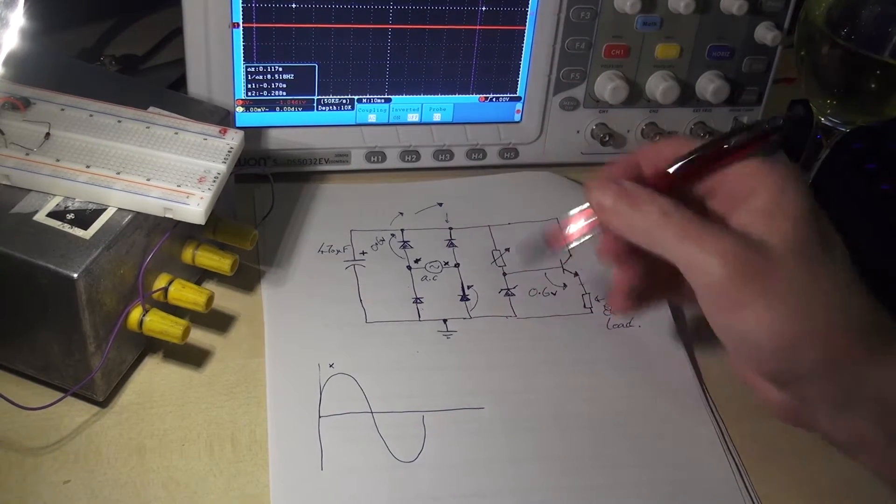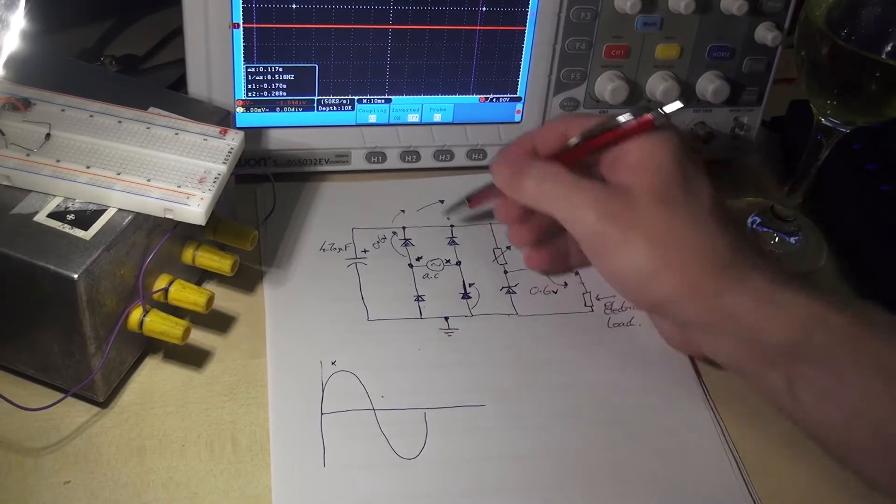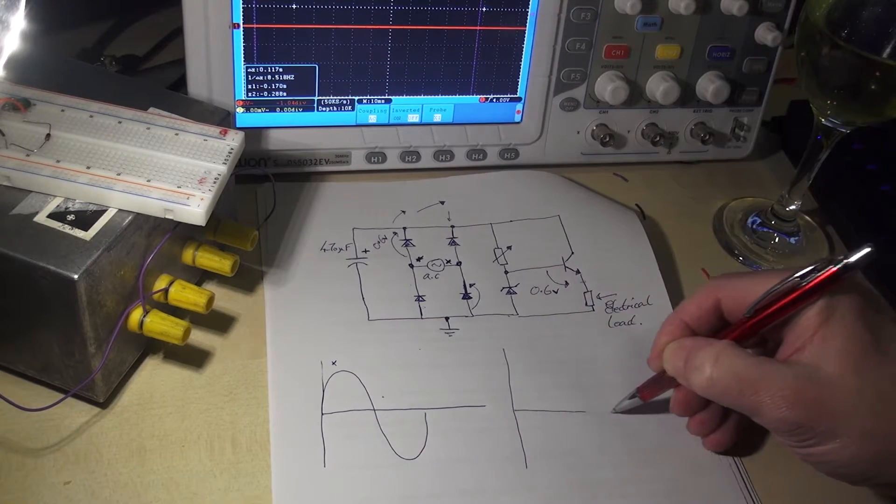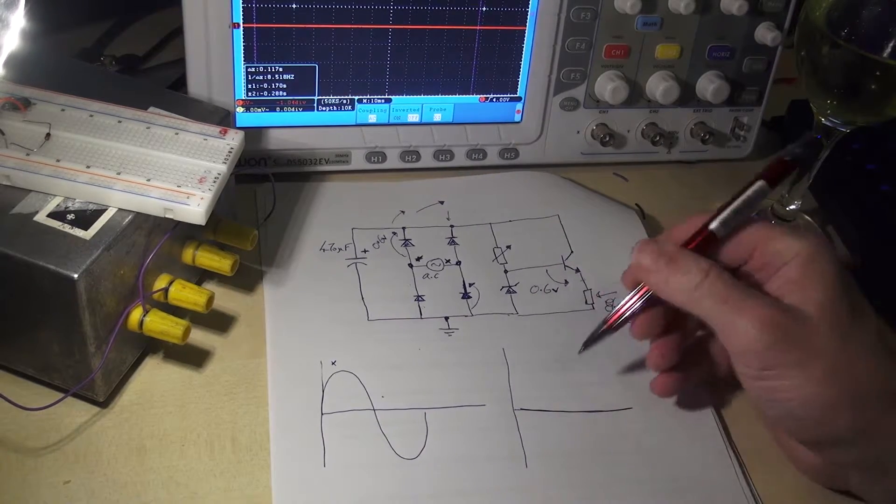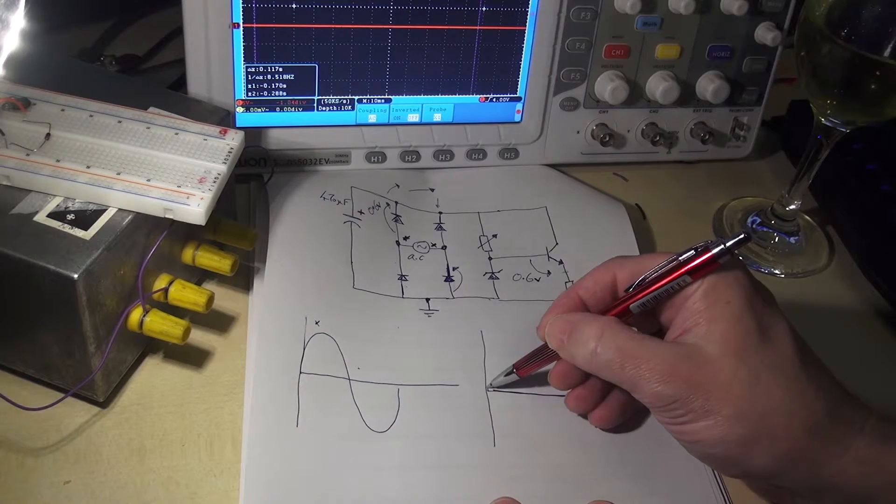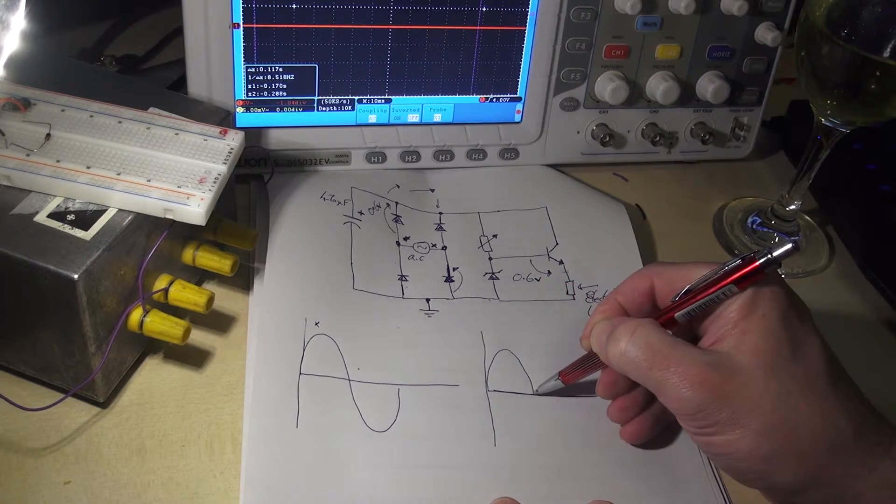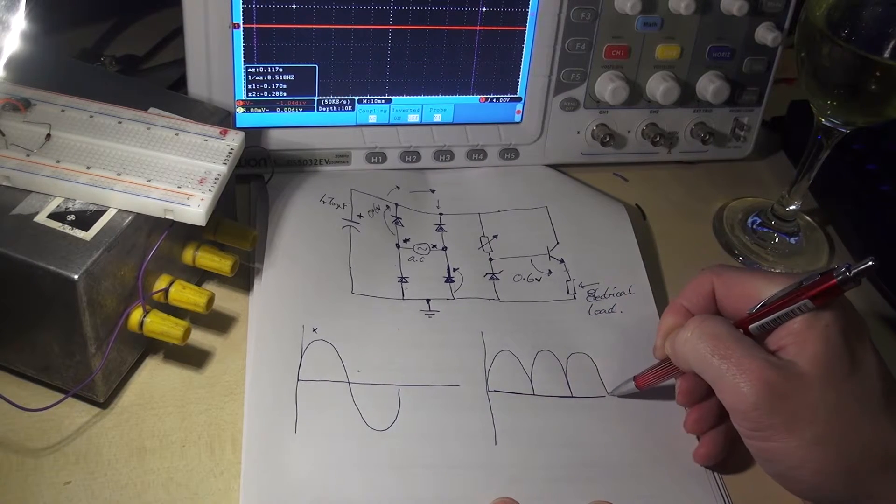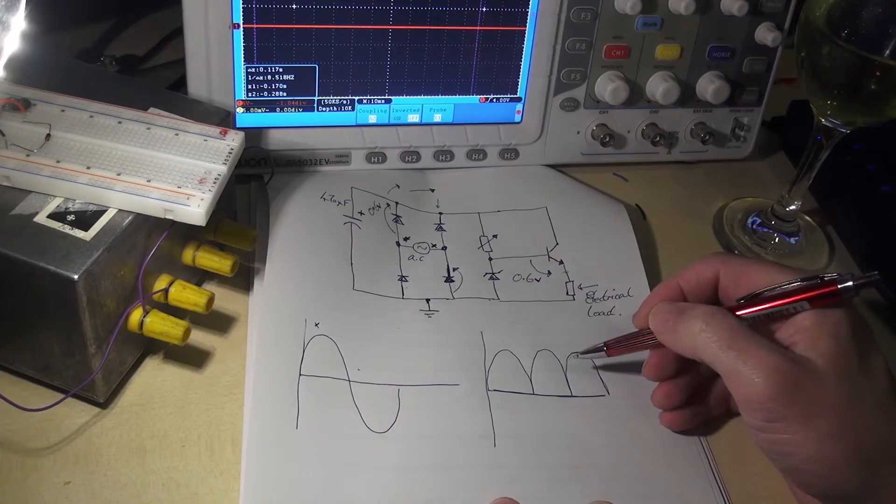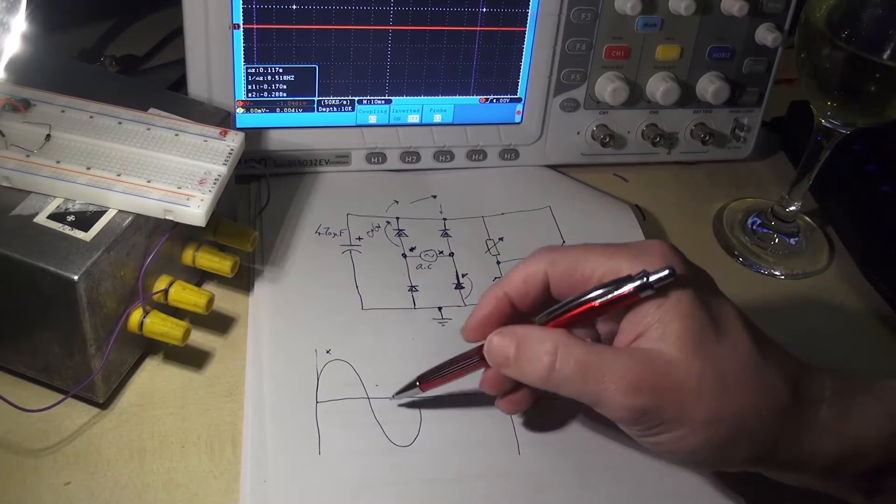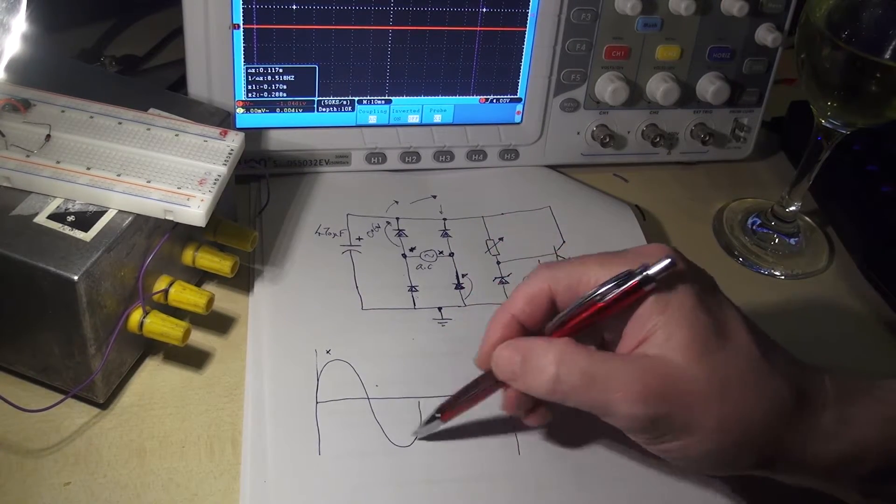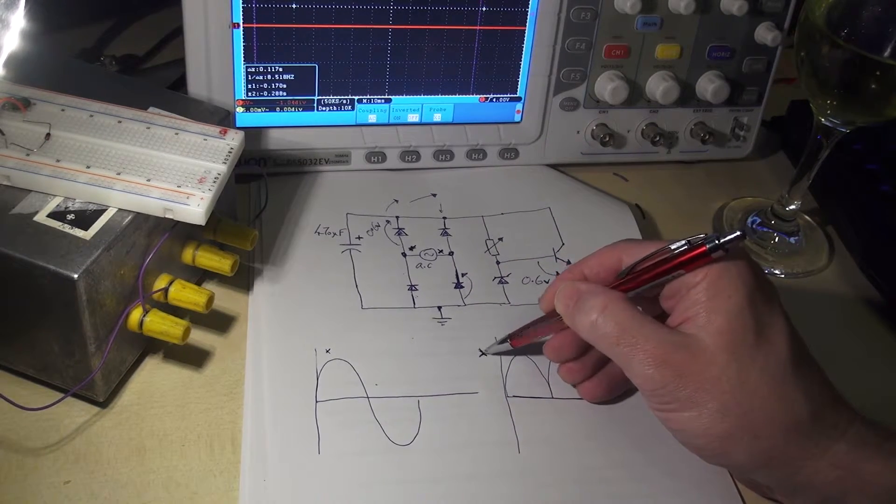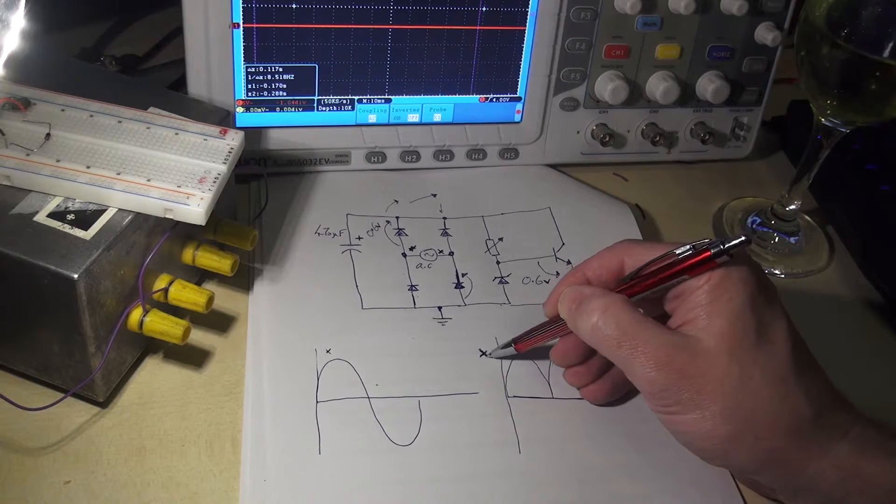But the key point to note is that the current flows in the same direction in the external circuit. So the input is AC here, but when, without the capacitor connected, when we measure, we've got direct current. It's very unsmooth direct current, but it's still direct current. And each negative going swing of the input has been converted to a positive swing.